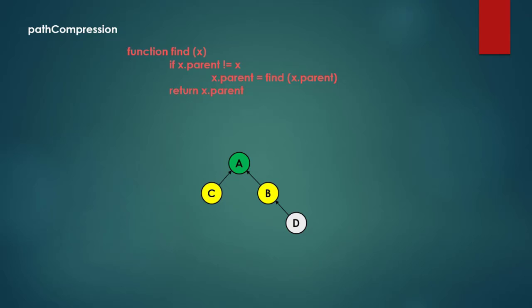This is good because the next time we look for C, we can find it very easily and return the representative. Whenever we call find on C, B, or D, all of them return the representative. Whenever we call find on an item, it returns not the value of the item, but the value of the representative — the root node.